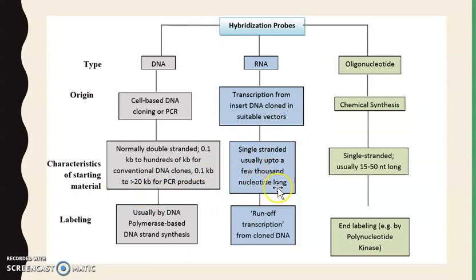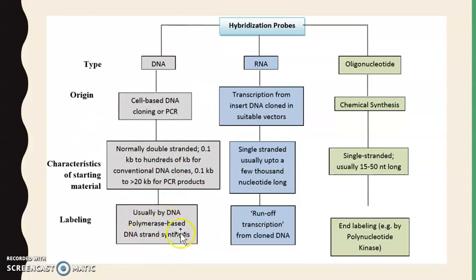RNA probes are single-stranded, usually up to a few thousand nucleotides long, and oligonucleotides can be synthesized in lengths of 15 to 50 nucleotides. After synthesis, there is a labeling procedure: DNA probes can be labeled using PCR-based methods, while RNA probes can be labeled by runoff transcription from cloned DNA, and oligonucleotides can be labeled through end labeling.